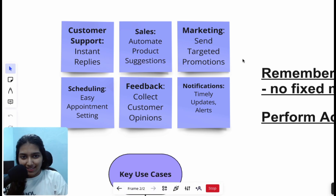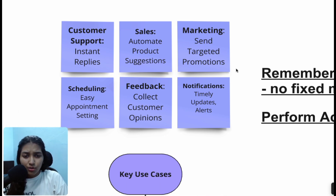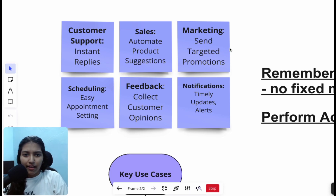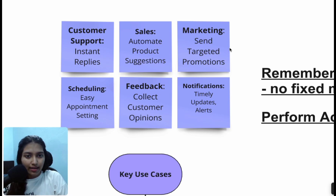Now talking about marketing — we could send targeted promotions and campaigns to users. That is something old school, but we could add AI to it. AI would analyze previous buying trends and information about the customer and accordingly send promotion messages, which would really increase the open rate as well as the buying rate compared to old-school WhatsApp outbound messaging.